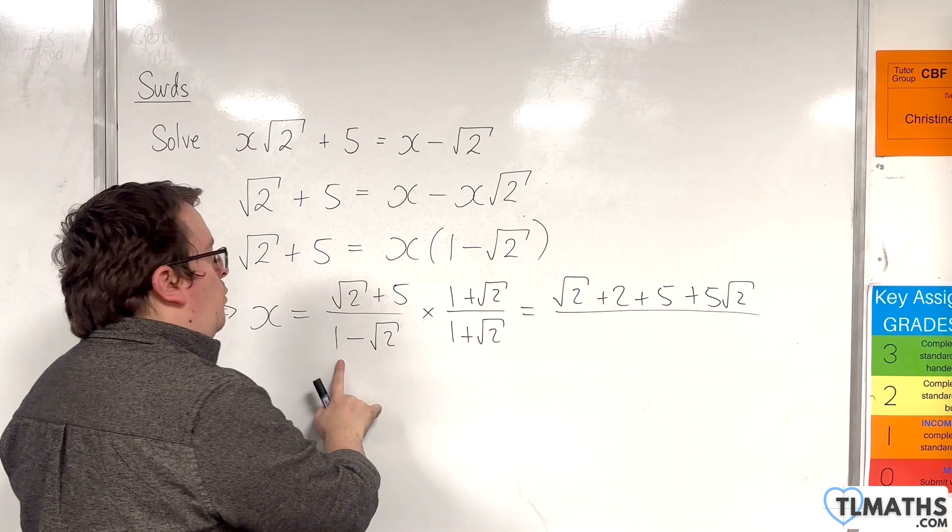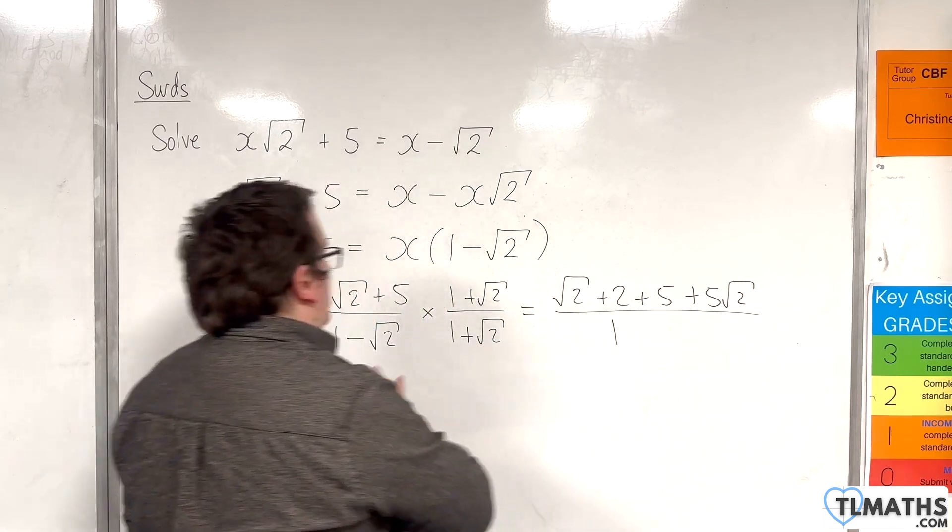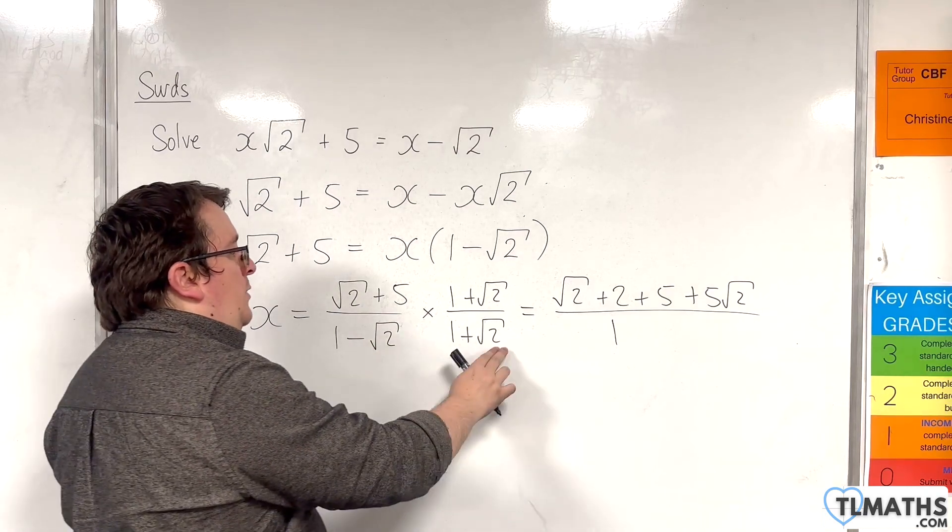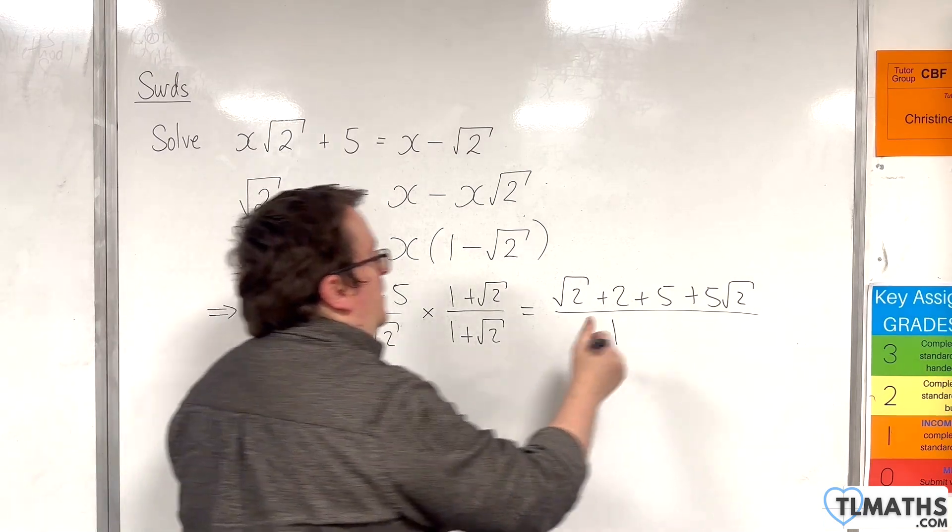And in the denominator, we're going to get 1 times 1, 1 times √2, 1 times -√2. They're gone. And then -√2 times √2 is -2.